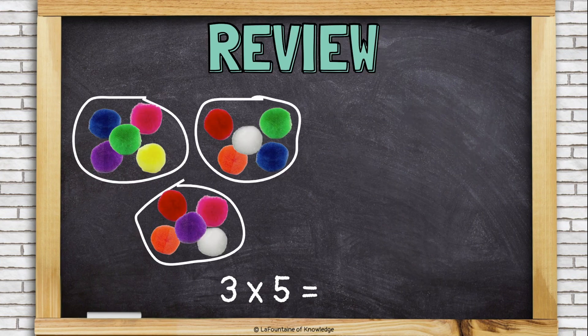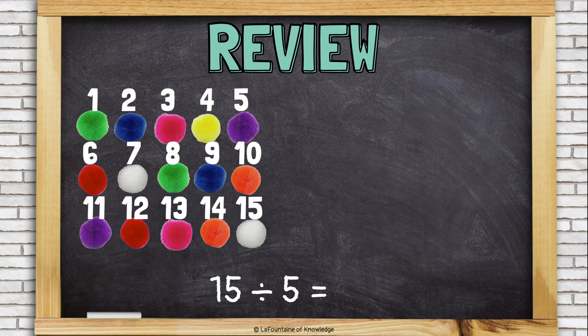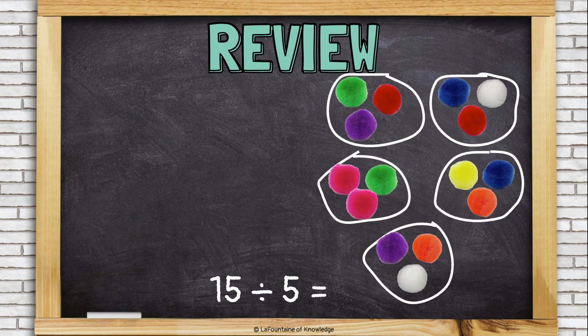Let's review. When we multiply, we have equal groups and we are taking the objects out of their groups to figure out the total number of objects. The big number is the answer to the multiplication problem — 3 times 5 is 15. When we divide, we start with the big number and divide them up into equal groups. The number of items in each group is the answer to the division problem: 3.